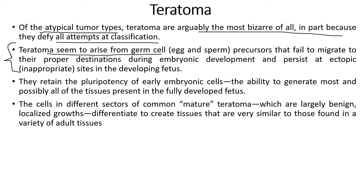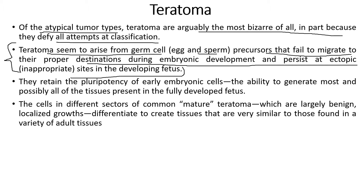Teratomas seem to arise from germ cells — egg and sperm precursors — that fail to migrate to their proper destination during embryonic development, and persist at ectopic sites in the developing fetus. These germ cells, which can be egg or sperm, fail to migrate to the proper destination and remain at inappropriate sites in the developing fetus.